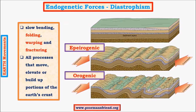Diastrophism encompasses all processes that move, elevate, or build up portions of the earth's crust. Along with folding, there are other processes like upliftment and subsidence. Upliftment leads to raising of a landform, whereas subsidence leads to a fall in the level of a landform.